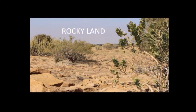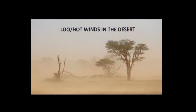Some parts of the Thar Desert are rocky and all other parts have plenty of sand. The sand moves from one place to another with the winds. The hot winds, called loo, blow here in summer.